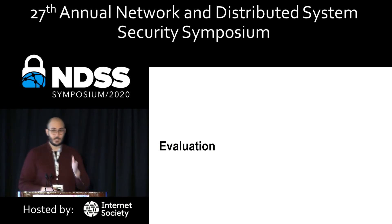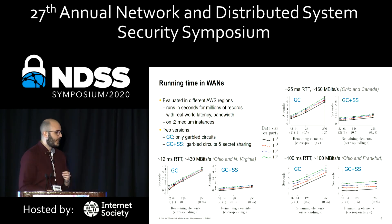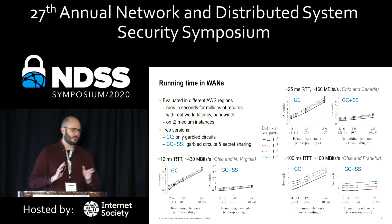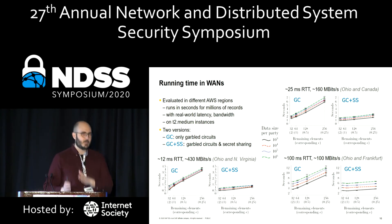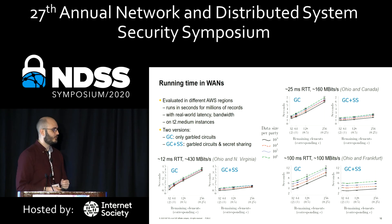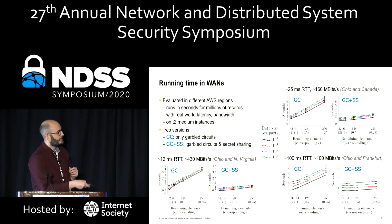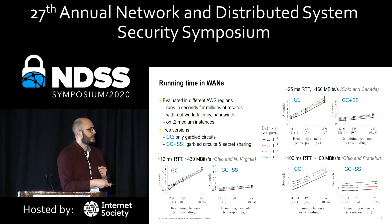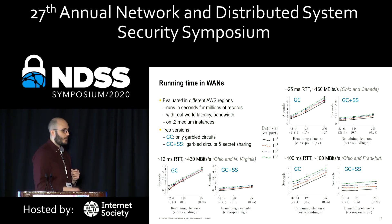For the evaluation, we have data on different AWS regions. The protocol runs in seconds for millions of records with real-world latency on T2 medium instances with 2GB RAM and virtual CPUs. We have two versions: one using only garbled circuits, and one using garbled circuits combined with secret sharing to show the benefit of the hybrid approach. Even at the highest latency of 100 milliseconds and 100 Mbit/s bandwidth, we achieve less than seven seconds for our highest evaluated privacy value with data sizes of millions of records on each side.